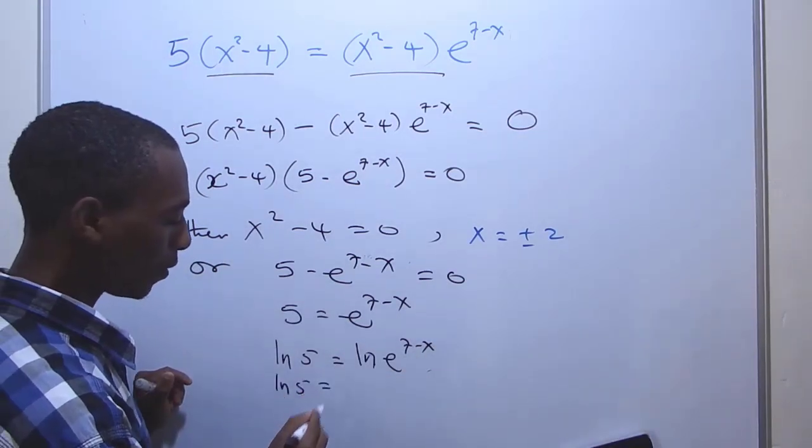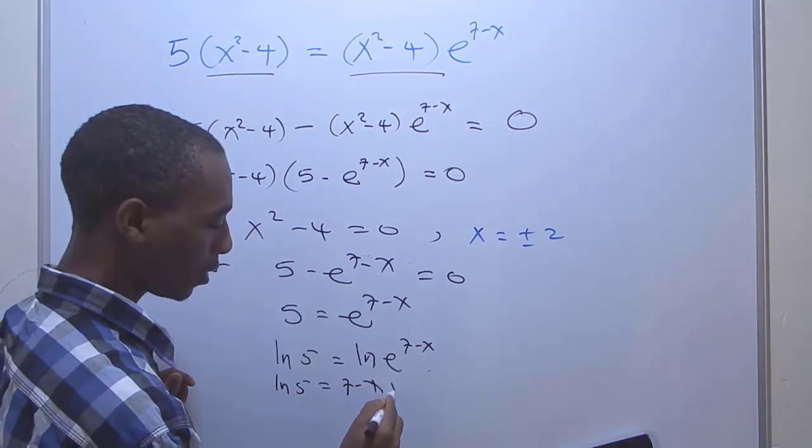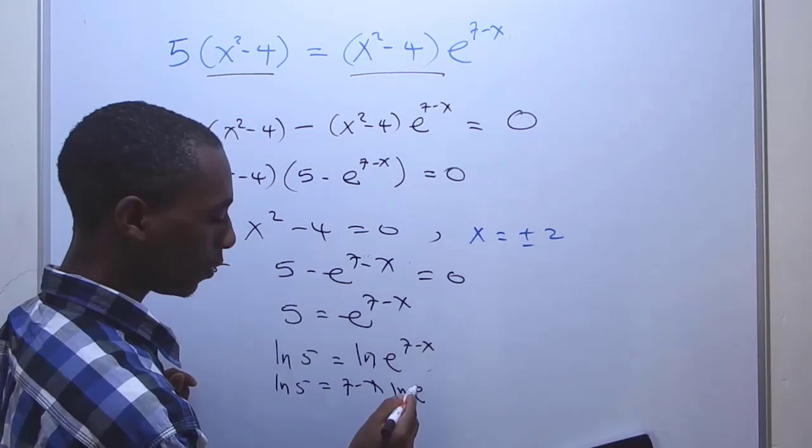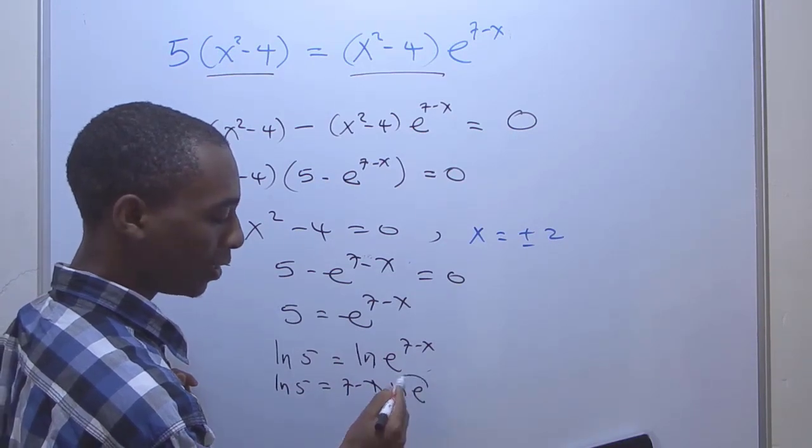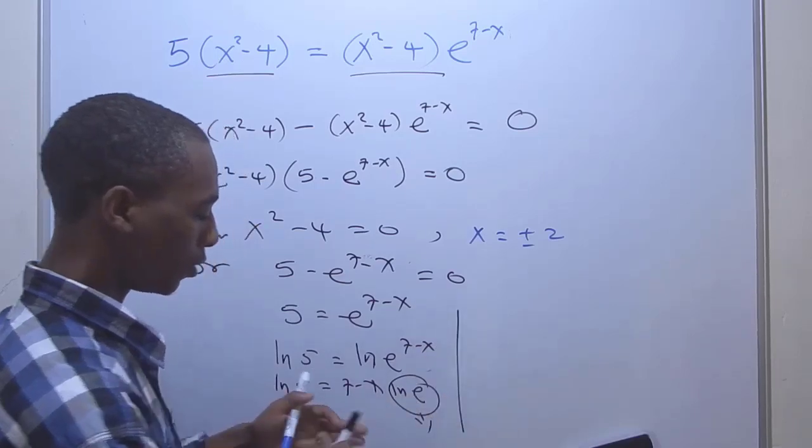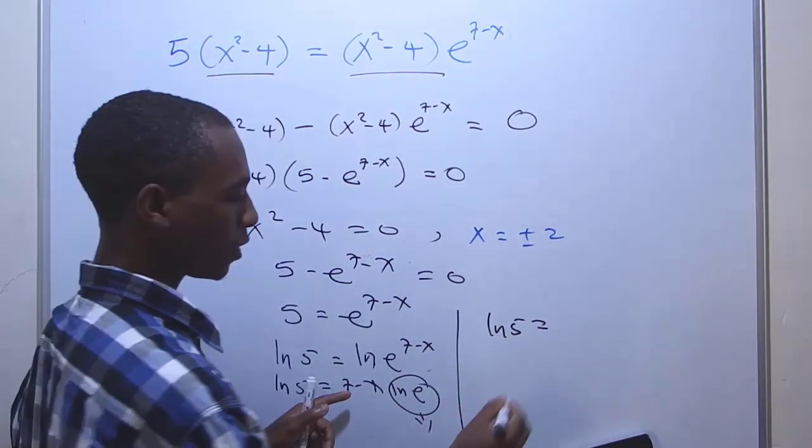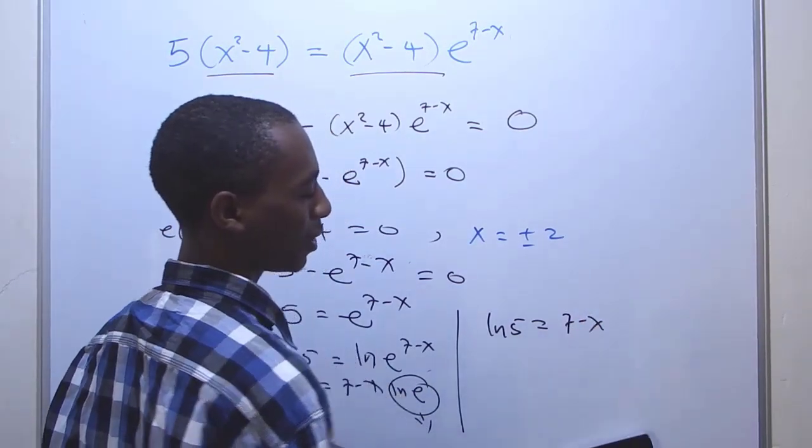If you're familiar with the laws, you'll see that this is going to come down here. So ln 5 = (7-x) × ln e. By definition, this is 1, so we'll just have ln 5 = 7 - x.